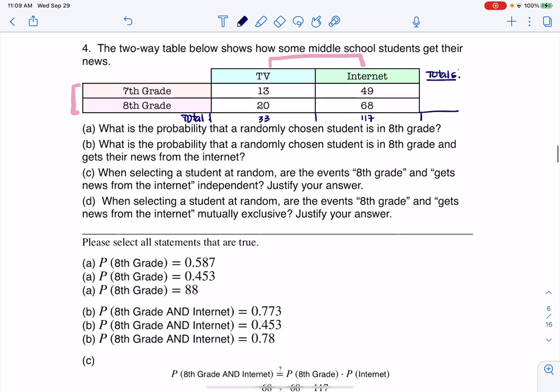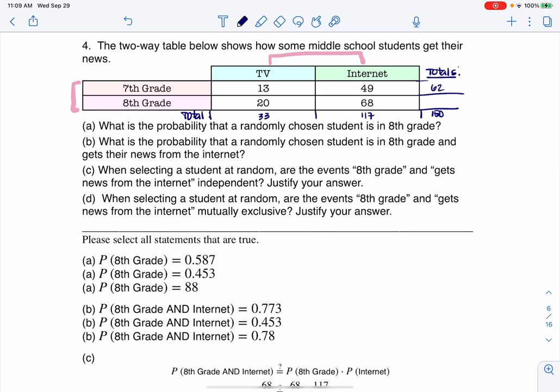And if I totaled those two, that would be 150. Let me make sure I can get 150 this way: 13 and 49 is 62, and this is 88, and 62 and 88 is 150. Okay, so that's checking out.